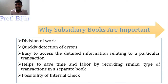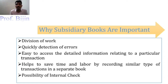Another advantage is easy access to detailed information relating to particular transactions. In the general journal there is not much information — just the transaction and a narration — but in subsidiary books there is detailed information for each transaction, such as the quantity of the item, the per unit price, and the source of purchase. This helps us identify detailed information about any particular transaction.